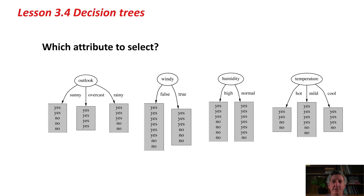You can see splitting on Outlook looks pretty good. We get one branch with two yeses and three noes, and then we get a pure yes branch for overcast, and when Outlook is rainy, we get three yeses and two noes. How are we going to quantify this to decide which one of these attributes produces the purest nodes? We're on a quest here for purity.